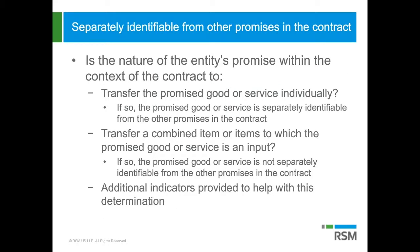When evaluating whether a promised good or service is separately identifiable from other promises in the contract, the overall objective is to determine whether the promise is to transfer individual promised goods or services, or to transfer a combined item that the promised goods or services act as inputs to. There isn't anything in the current guidance comparable to this, which means some things you account for separately today may not be accounted for separately under ASC 606.